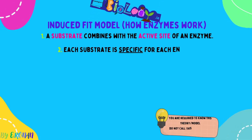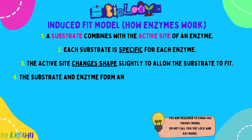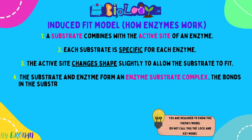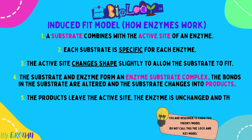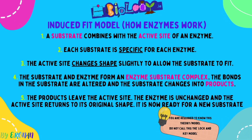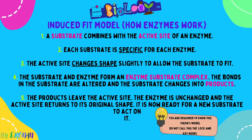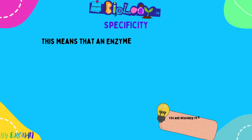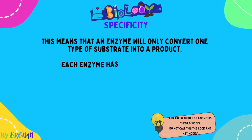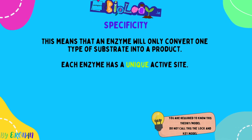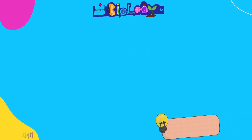The induced fit model is how enzymes work. The substrate combines with the active site of an enzyme, and each substrate is specific or unique to that enzyme. When it combines, the active site changes shape slightly, converts the substrate into products, the products leave, and the active site goes back to its original shape — ready for the next substrate to enter it. Remember: one substrate is unique to the active site of an enzyme. Regarding specificity — do not use the word 'specific' in your answer. This means that an enzyme will only convert one type of substrate into a product, because each enzyme has a unique active site and will only combine with one particular substrate.